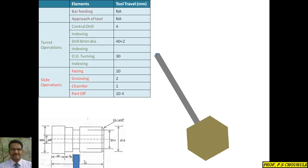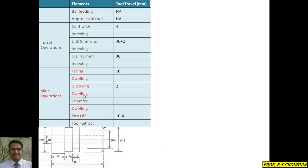For the grooving operation, to maintain surface finish, we place the tool at that position for a short time — this is called dwelling. For slide operations: after facing there is dwelling, after grooving there is dwelling, after chamfer there is dwelling. For part off, dwelling is not required. Tool travel values: facing 10 mm, central drill 2 mm approach, turning 1 mm, part off 10 minus 4 equals 6 mm.